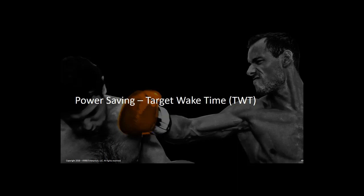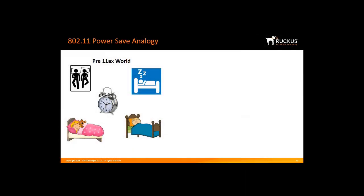Another key feature that 11ax brings for battery operated clients and mobile devices is improving on the existing 11ac power saving mode. The new 11ax feature is called Target Wake Time, or TWT for short. The way 802.11 PowerSave works today is like an entire house having one large alarm clock. Even if only one person needs to be woken up, the alarm wakes everyone. In the pre-11ax Wi-Fi world, this is what 802.11 PowerSave does with its beacons — everyone must listen to the beacons and see if the beacon is for them. This means mobile battery-operated clients, especially small IoT devices, are wasting precious battery power by being woken up frequently.